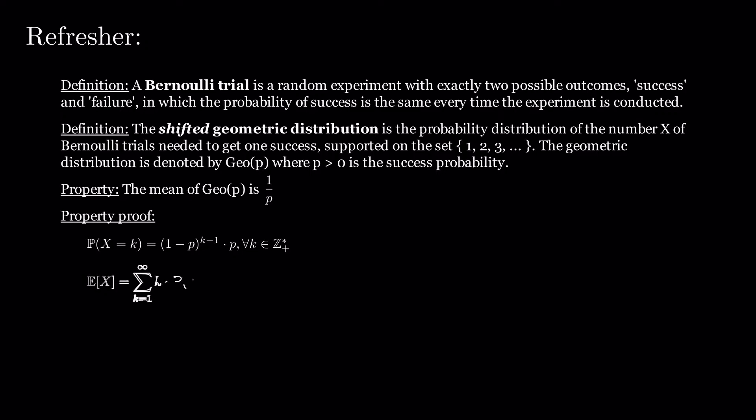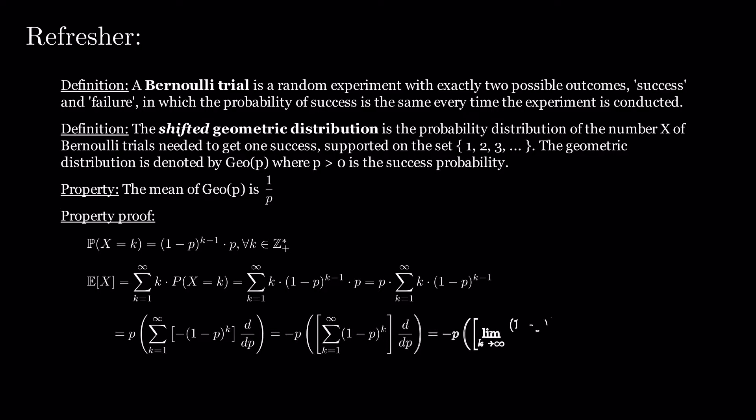Expectation of X equals sum of K times probability of X equals K over K between 1 and infinity, which is sum of K times 1 minus P to the power of K minus 1 times P. Pulling P in front of the sum and writing K times 1 minus P to the power of K minus 1 as minus 1 minus P to the power of K d over dP, we get that expectation of X equals minus P times 1 over P d dP, which is 1 over P.